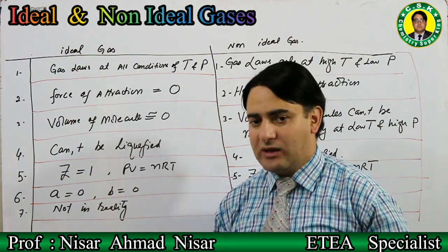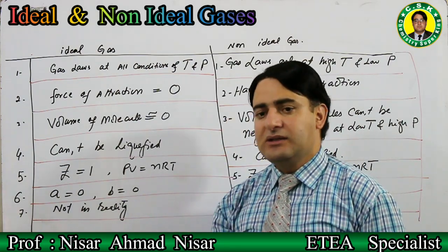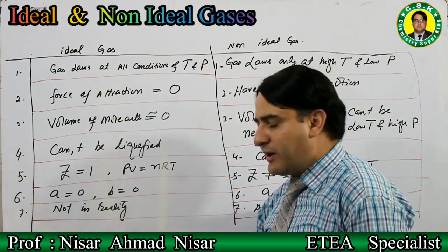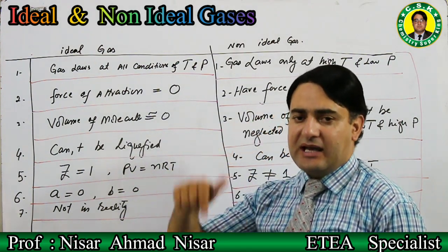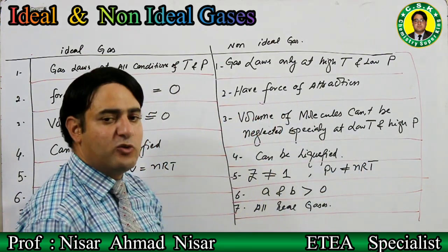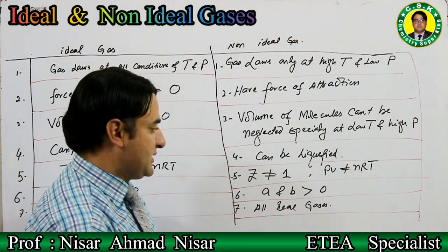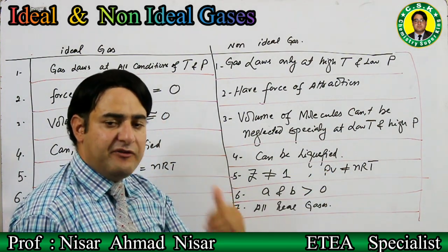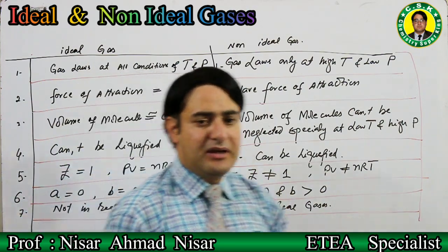This Z is the compressibility factor — I will explain it in detail later. For ideal gases, Z equals 1, and PV equals nRT, meaning ideal gases obey the ideal gas equation. Whereas for non-ideal gases, Z is not equal to 1 — Z can be greater than 1 or less than 1 — and PV is not equal to nRT. Any gas for which PV ≠ nRT is not ideal.